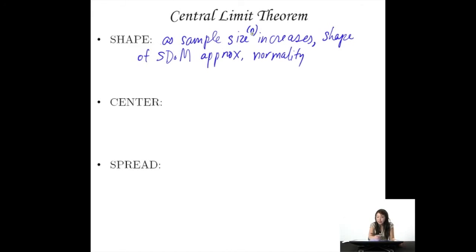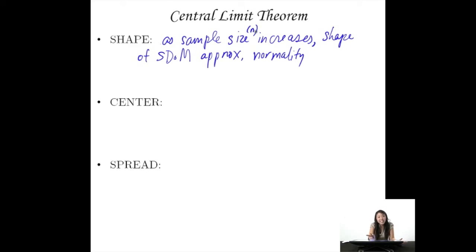The central limit theorem says: as sample size increases, the shape of the SDOM approximates normality. As n goes up, the shape becomes more normal — and they've actually proven this mathematically. Note that although it's not part of the central limit theorem, the population isn't necessarily the same shape as the SDOM. The SDOM is almost always normal as long as sample size is large — but that doesn't mean populations are always normal. That's helpful: we know the shape of the SDOM even though we don't know the shape of the population.